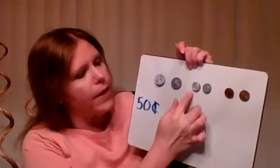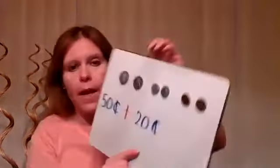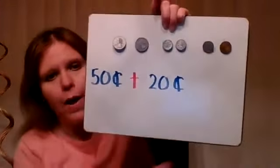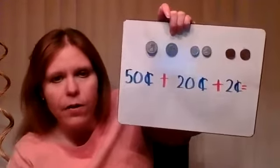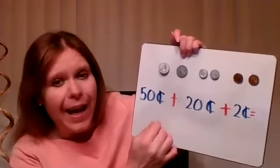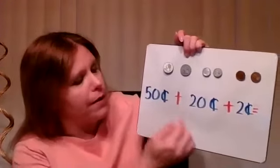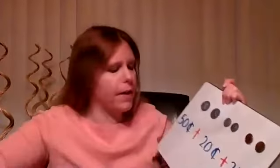Then we have two dimes. A dime is worth 10 cents, so we count: 10, 20 — that means we add plus 20 cents. And we have two pennies; a penny is worth one cent, so two pennies gives us two cents. Now let's do the mental math: 50 cents plus 20 cents. Ten at a time — 50 plus 10 is 60, 10 more than 60 is 70. So we have 70 cents.